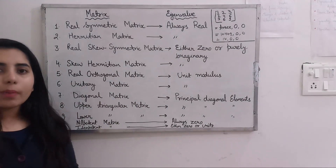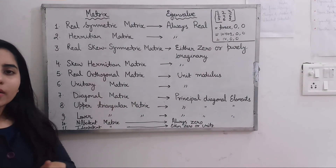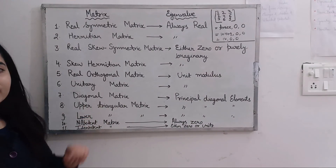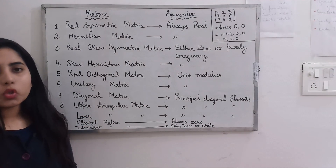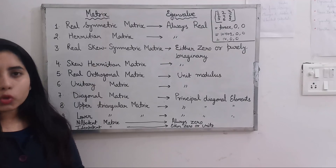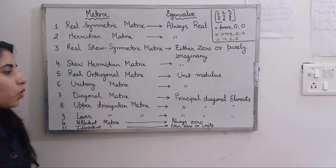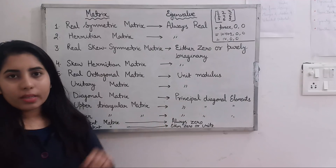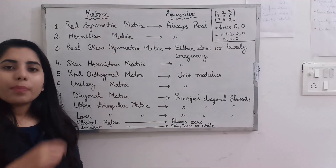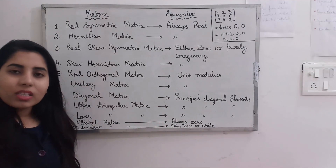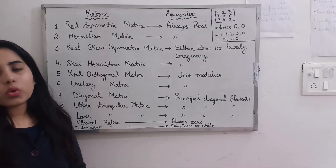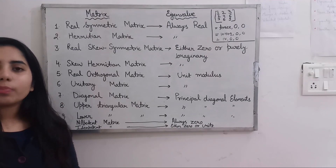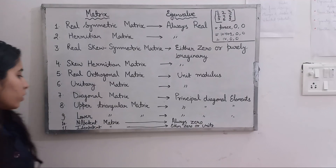Next, if you have a diagonal matrix, lower triangular matrix, or upper triangular matrix and you are asked about eigenvalues, the eigenvalues are simply the principal diagonal elements. Whatever elements are present on the principal diagonal of that matrix — those are your eigenvalues.